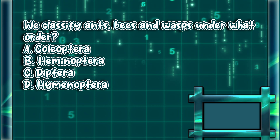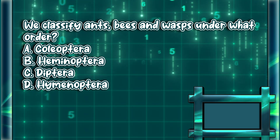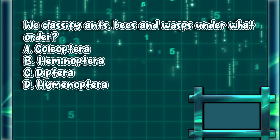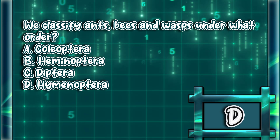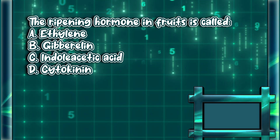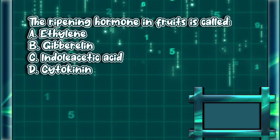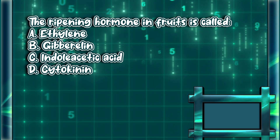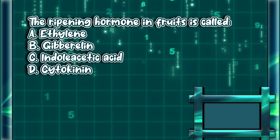We classify ants, bees, and wasps under what order? A) Coleoptera, B) Hemenoptera, C) Diptera, D) Hymenoptera. The answer is letter D. The ripening hormone in fruits is called: A) ethylene, B) gibberellin, C) indoleacetic acid, D) cytokinin. The answer is letter A.